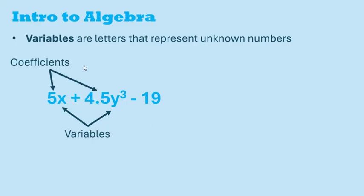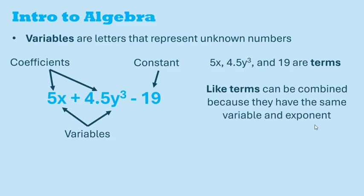Numbers multiplying in front of the variables are called coefficients, and numbers without variables are called constants. The 5x, 4.5y cubed, and 19 are terms. Like terms can be combined because they have the same variable and the same exponent.